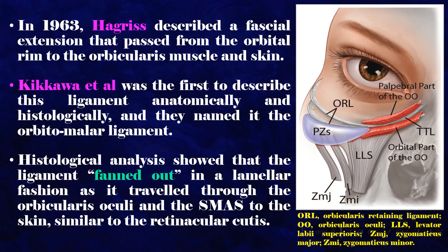In 1963, Hagris described a facial extension that passed from the orbital rim to the orbicularis muscle and skin. Kikawa et al. was the first to describe this ligament anatomically and histologically, and they named it the orbitomalar ligament. Histological analysis showed that the ligament fanned out in a lamellar fashion as it traveled through the orbicularis oculi and the SMAS to the skin, similar to the retinacular cutis.